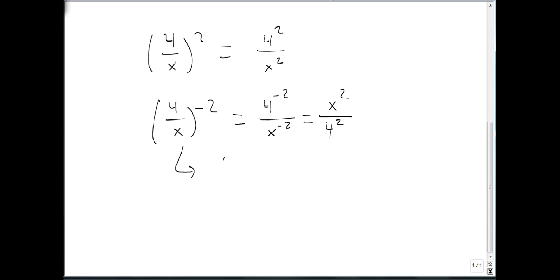An alternative route would be just to turn this over first, x over 4 squared, and then we'd get x squared over 4 squared as our answer.